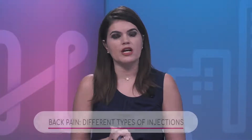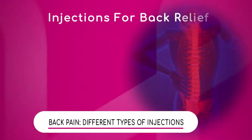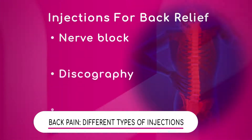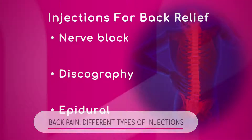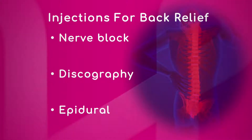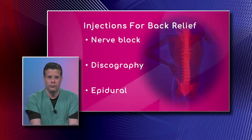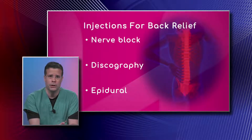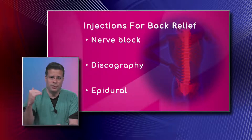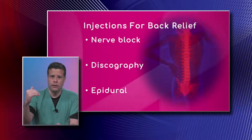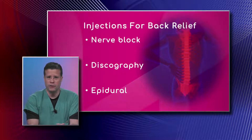Let's go over the different types of injections for back relief. The first one is a nerve block. The nerve block is an injection for nerve pain coming from a compression in the spine — from arthritis or even a disc herniation. These are what we call transforaminal injections or epidural injections. The terms nerve block and epidural injection are interchangeable; they are essentially the same thing.